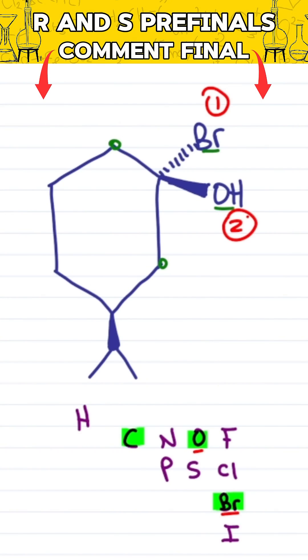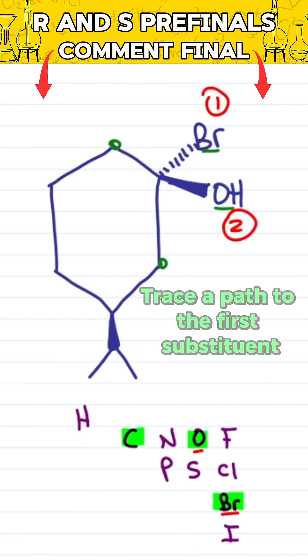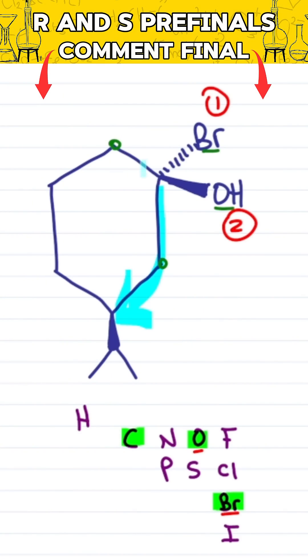What about the two carbons? Instead of digging into every CNH, I will trace a path to the first substituent. Here I hit it after two, here it takes longer, giving me three and four.